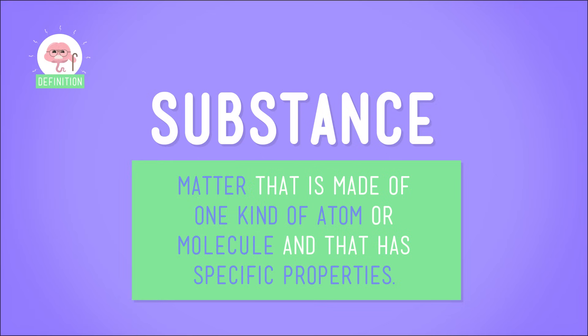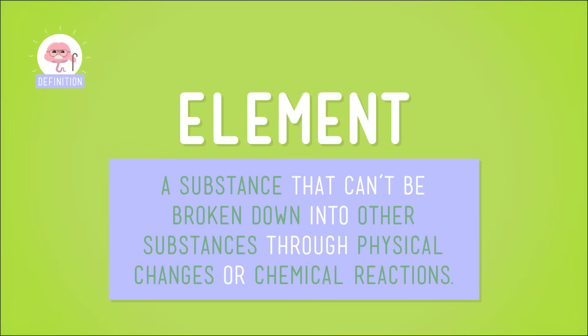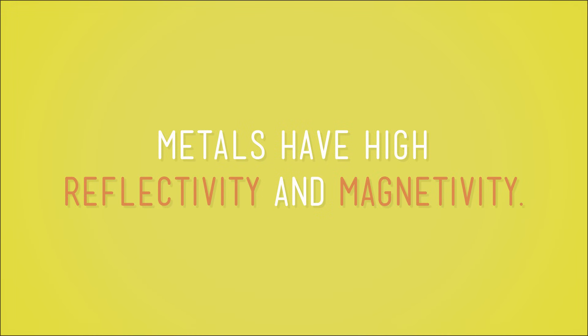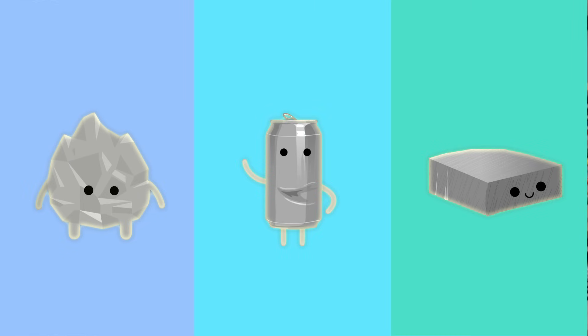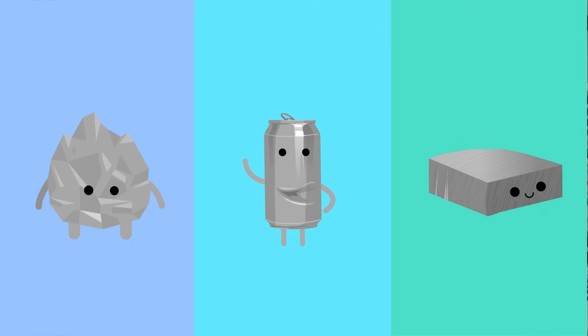We already know that a substance is matter that's made of one kind of atom or molecule and has specific properties, and that some substances are elements, which means they can't be broken down into other substances through physical changes or chemical reactions. We can group substances and elements by their properties — all the metal things from the bottom of my backpack were shiny and attracted to a magnet. Metals have high reflectivity and magnetivity, and from our lunch investigation, we know metals are good conductors of heat and electricity, and are often silver or gray in color.